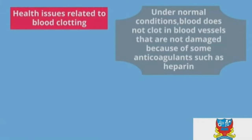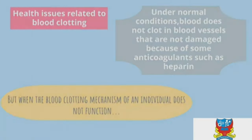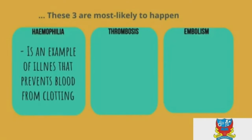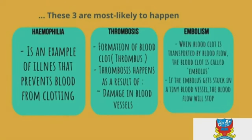Under normal conditions, blood does not clot in undamaged blood vessels due to anticoagulants such as heparin. When the blood clotting mechanism does not function correctly, three conditions may result: haemophilia — an illness that prevents blood from clotting; thrombosis — a formation of a blood clot due to damage in blood vessels; and embolism — when a blood clot called an embolus is transported by blood flow and becomes stuck in a tiny blood vessel, stopping blood flow.